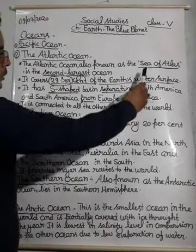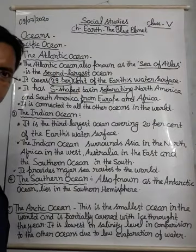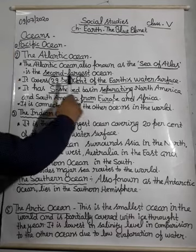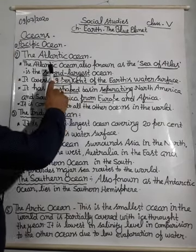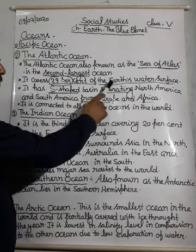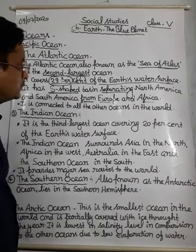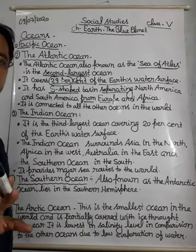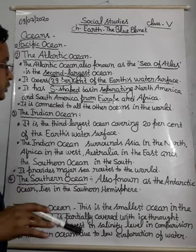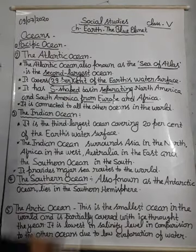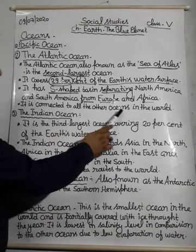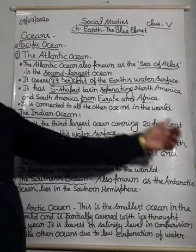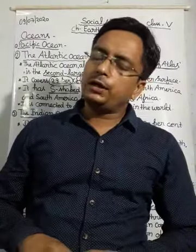So, to summarize: the Atlantic Ocean is also called the Sea of Atlas. It is the second largest ocean. It covers 29% of Earth's water surface. It is the S-shaped ocean. And it is connected to all other oceans in the world.